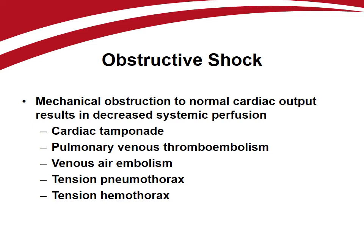Venous air embolism is diagnosed by auscultation of the classic mill-wheel heart murmur. Immediate placement of the patient in a head-down, left lateral decubitus position is advocated, as are attempts to aspirate air from the right ventricle through a central venous catheter. Finally, tension pneumothorax and tension hemothorax may both cause shock through obstruction of venous return, as elevated intrapleural pressure collapses intrathoracic veins, resulting in inadequate venous filling.